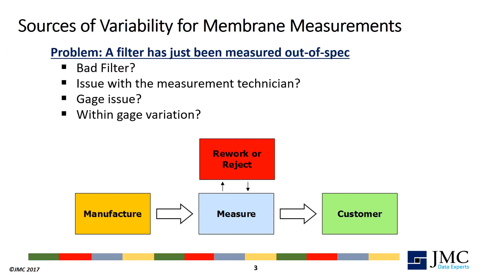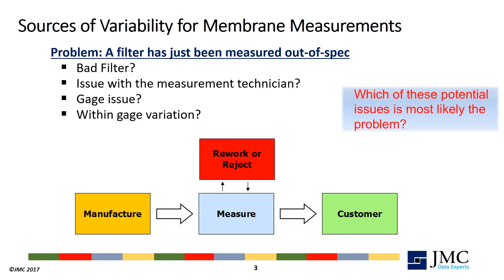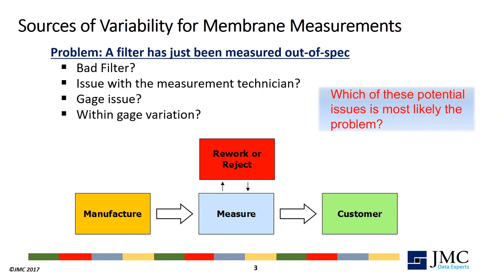If a part was measured out of specification because it was a bad part, rejecting it means our quality control strategy is doing its job. But if the poor reading was caused by gauge-to-gauge variation, technician variability, or within-gauge variation, should we reject the part? The membrane manufacturer set out to find out which causes were most likely.